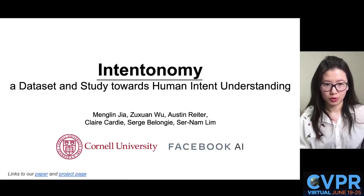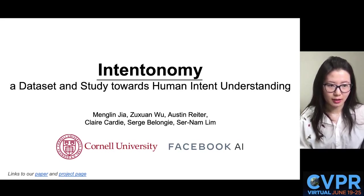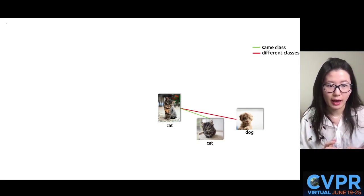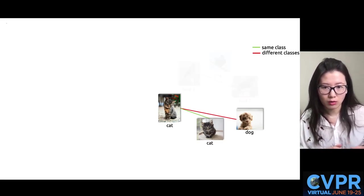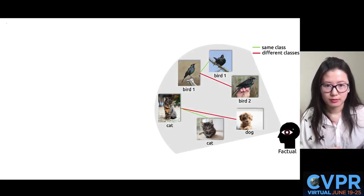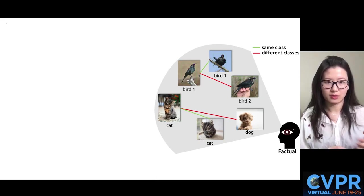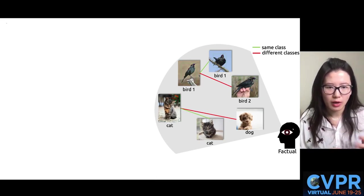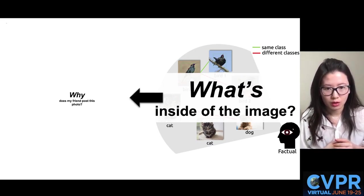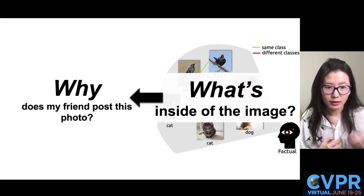This video will introduce our recent work in Intentonomy, a dataset and study towards human intent understanding. The goal of traditional vision tasks is to predict a set of stuff and thing categories, like cat or dog, or a brewer blackbird or rusty blackbird. Essentially, these tasks are equivalent to asking what physically exists inside of the images. In this work, we investigate why instead of what.